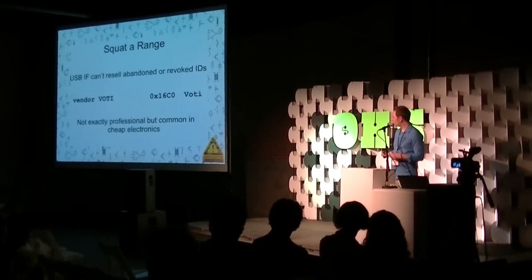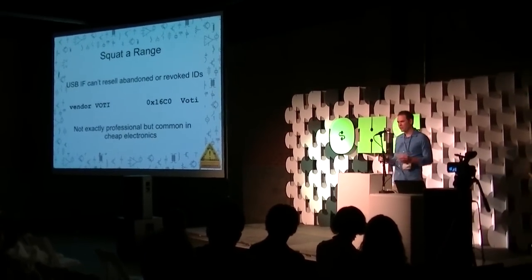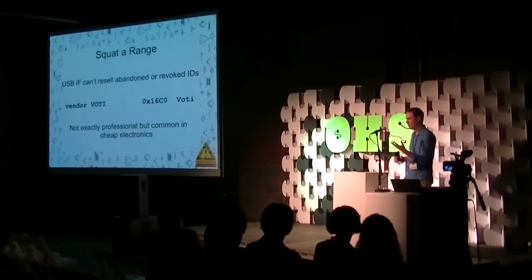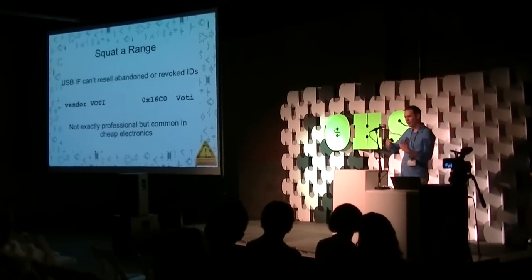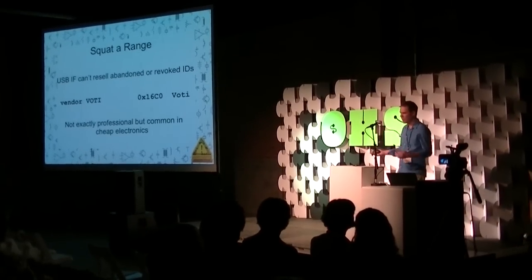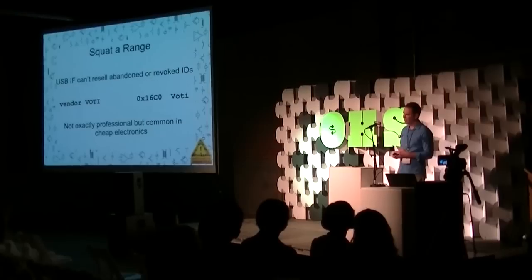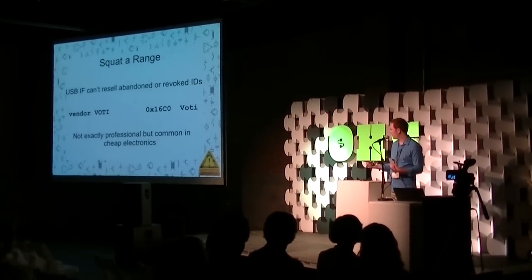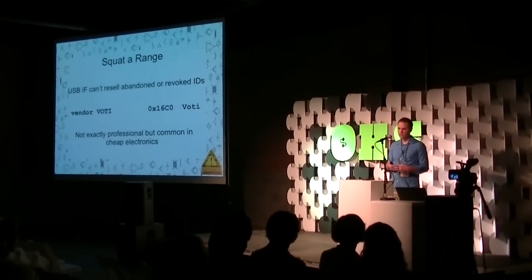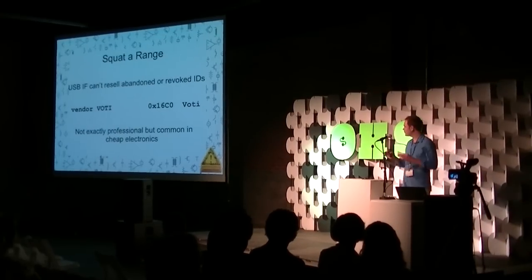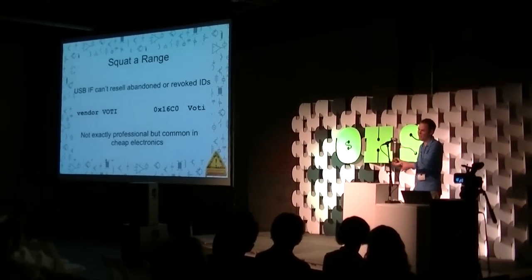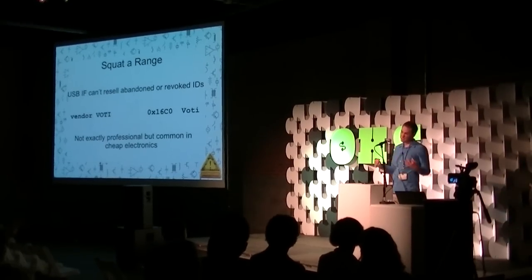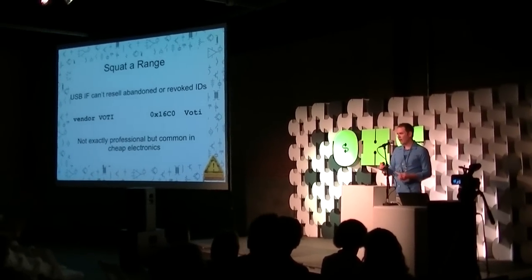A sort of gray area of USB IDs is to squat a range. When the USB Implementers Forum takes away the Dutch guys' IDs, or when a company goes bankrupt or an ID is abandoned, the Forum can't resell it because it's been tainted — people run the risk of getting duplicate numbers. So open source hardware can squat that range, pick a number in an abandoned range, and start selling products with it. But it's not exactly professional, though you do see it a lot in cheap electronics.